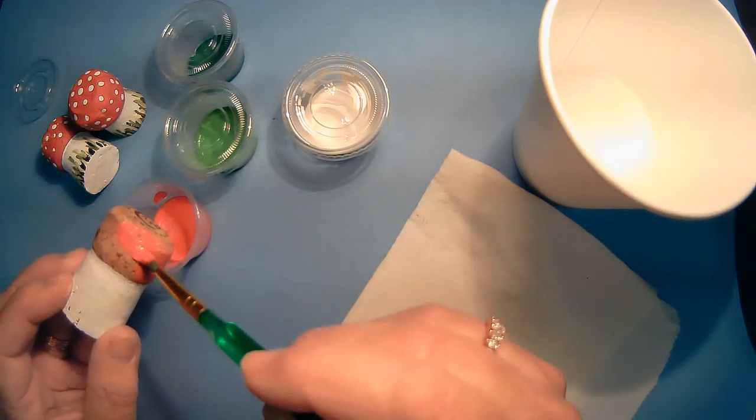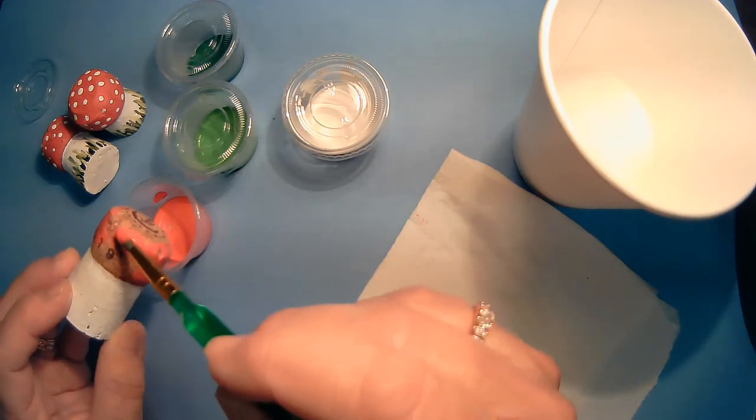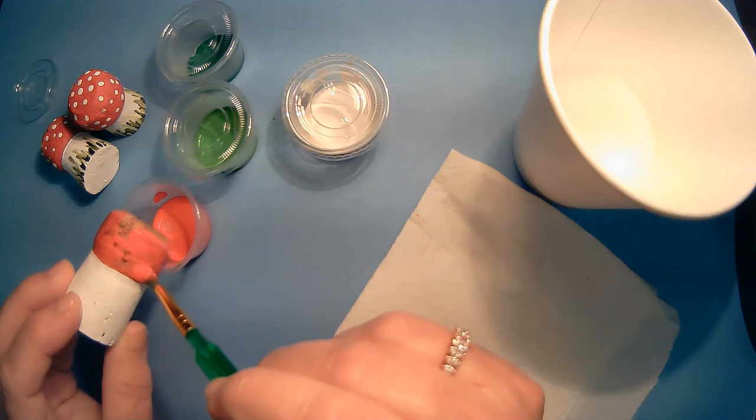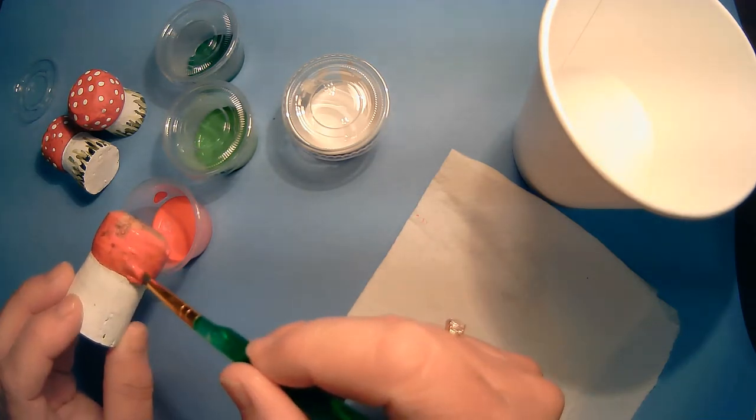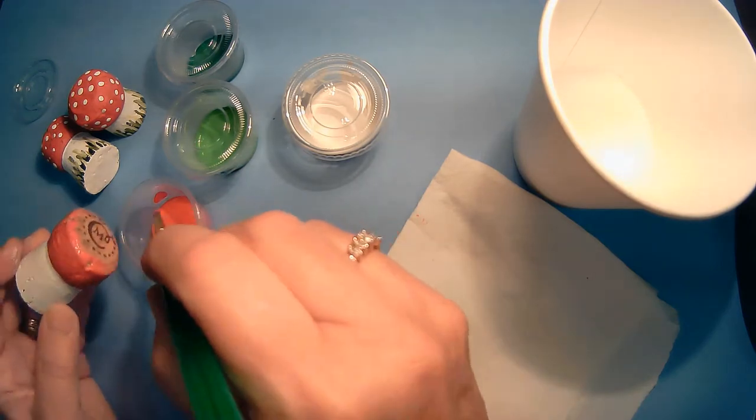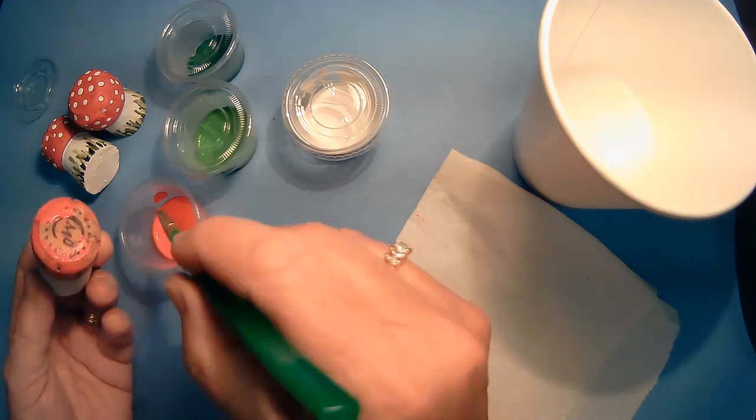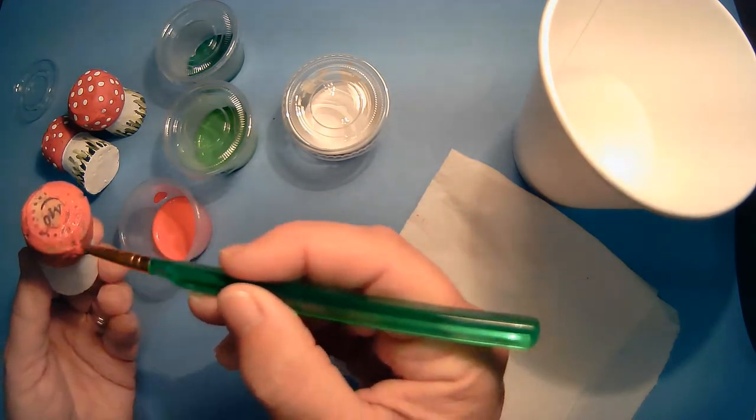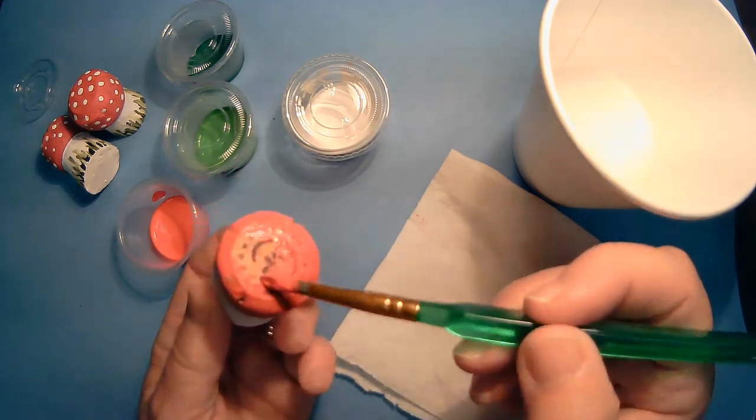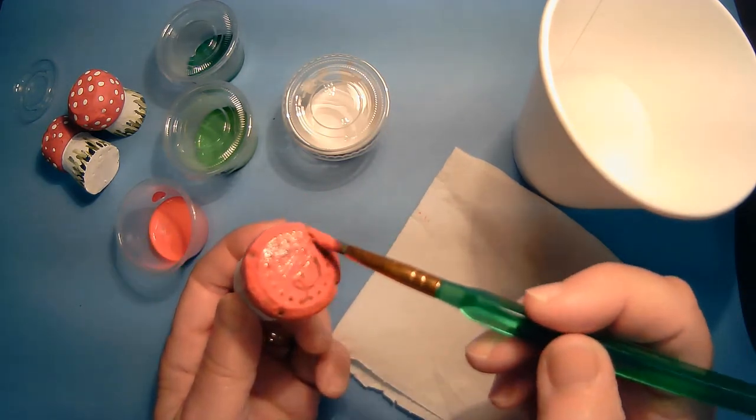Cover all the cork, we don't have to see any of the brown. You can do this with any cork. These are special corks. They're champagne corks. So they have that mushroom look. But you can do this with any cork. You can buy cork in the craft store.